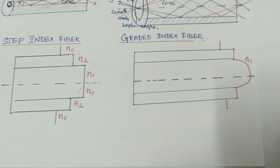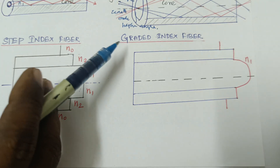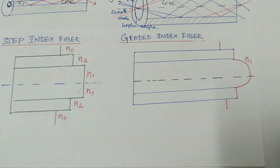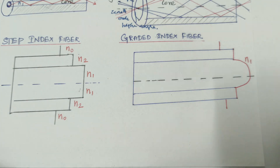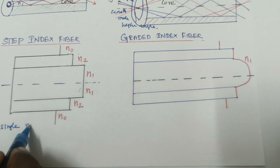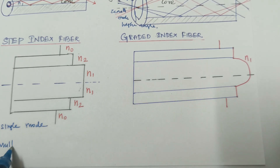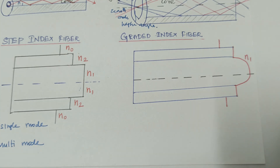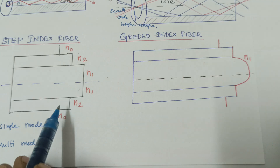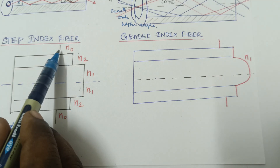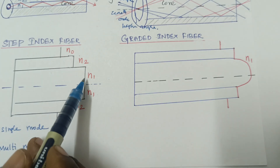The third classification is based on refractive index. There are two types: step index fiber and graded index fiber. Step index fiber is further classified into two types: step index single mode and step index multi-mode. In step index fiber, the structure consists of a uniform refractive index — the refractive index changes from core to cladding step by step, which is why it is called step index fiber.